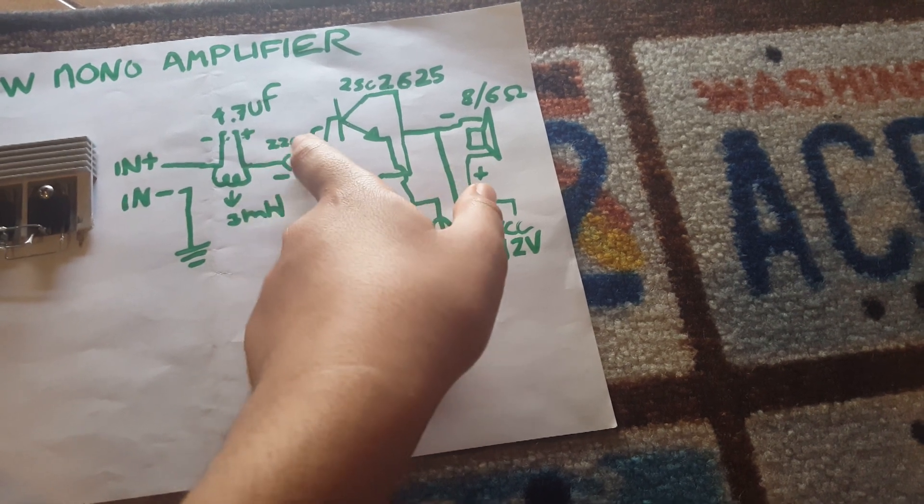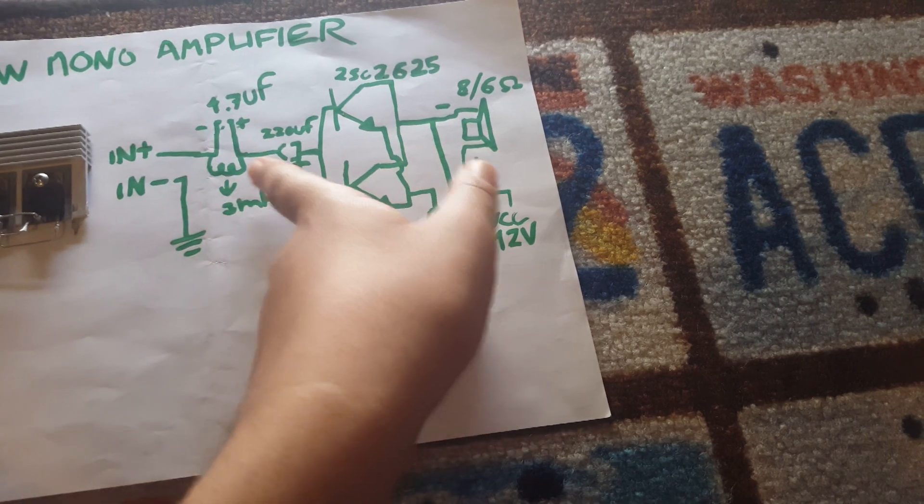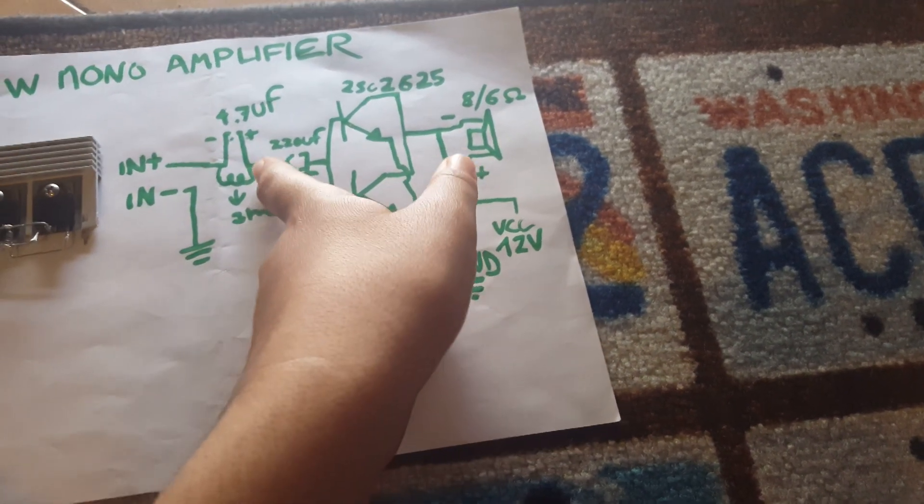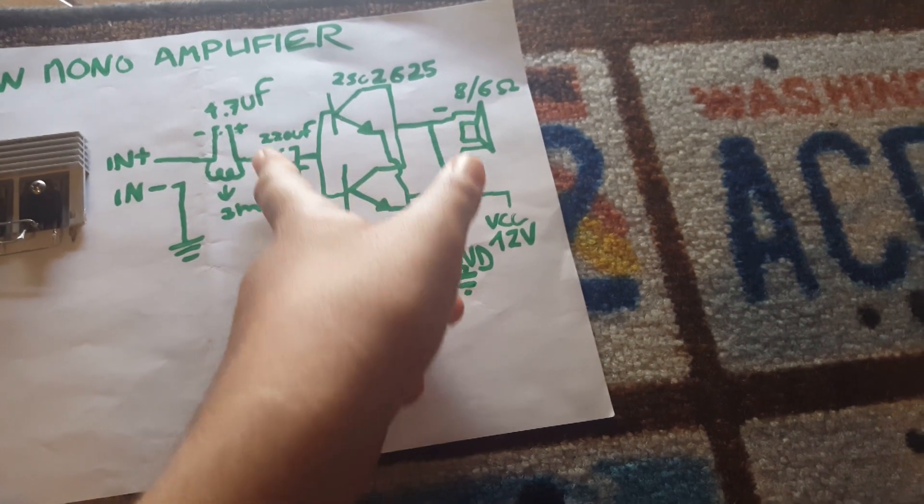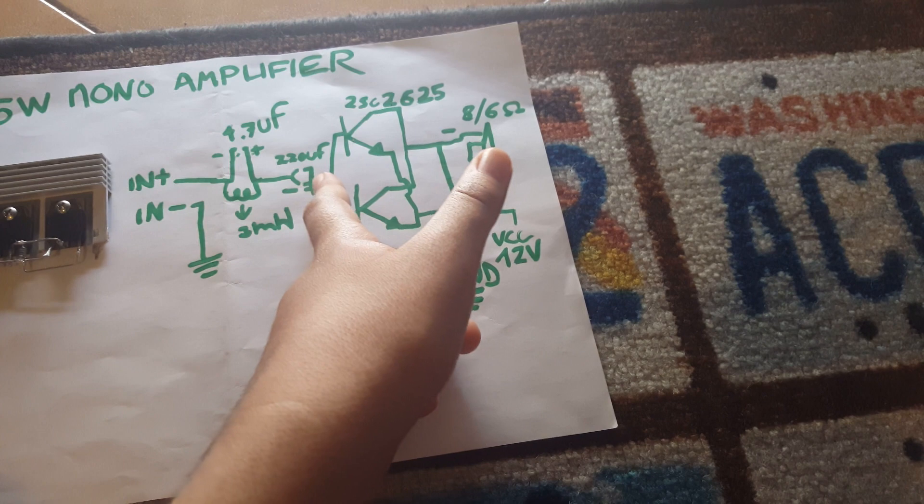Place the plus to the minus of this capacitor and minus to the input plus, and a 3mH inductor in parallel with the 4.7uF capacitor. This one will increase the bass and clean up the audio quality.